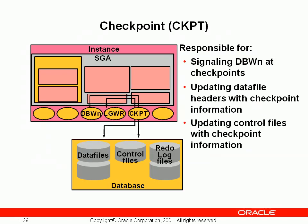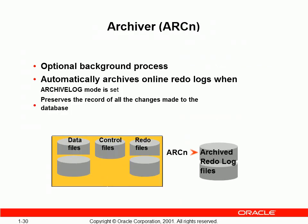CKPT, checkpoints, is a location in a redo log file. It has entries from where to start recovery, and its information is stored in a control file. The Archiver is an optional background process that, when enabled, will archive online redo log files.